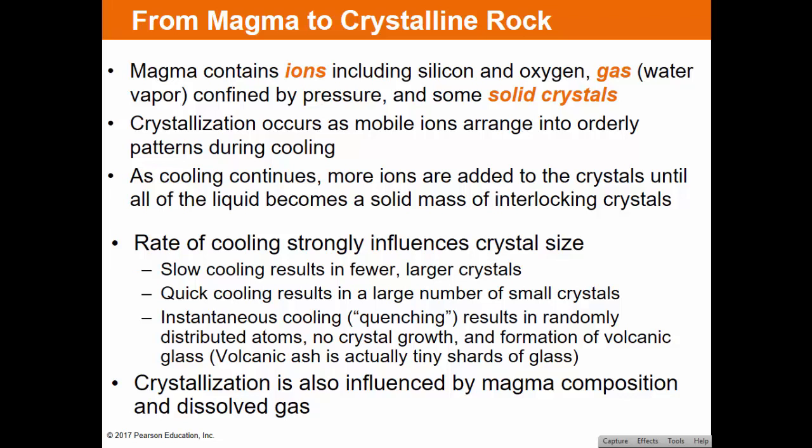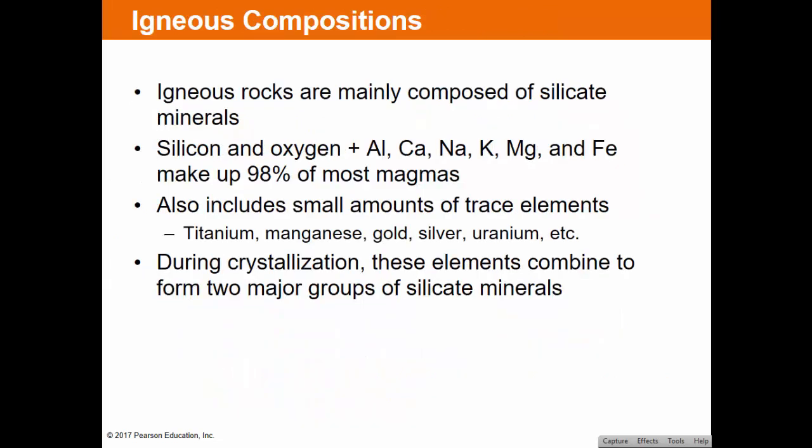Volcanic glass is not considered a mineral. Ash is actually tiny shards of volcanic glass. Crystallization is also influenced by magma composition and dissolved gases. The rate of cooling, the chemical composition, and the dissolved gases all influence crystallization. Igneous rocks are generally composed of silicate materials — silicon and oxygen are the main elements, along with aluminum, calcium, iron, and magnesium, which make up about 98% of most magmas. Small amounts of trace elements like titanium, manganese, gold, silver, and uranium also exist.